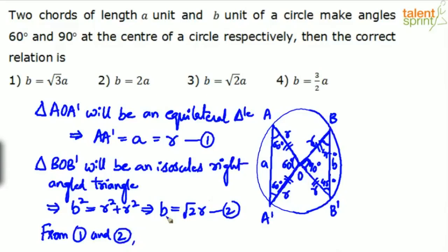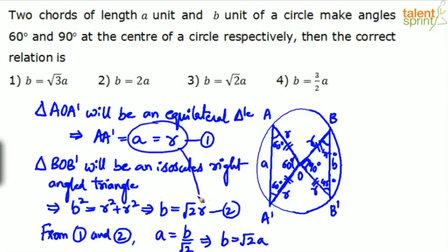Comparing the two results — from equation 1: a = r, and from equation 2: b = √2·r — substituting r = a gives b = √2·a. The final answer is option 3: b = √2·a.